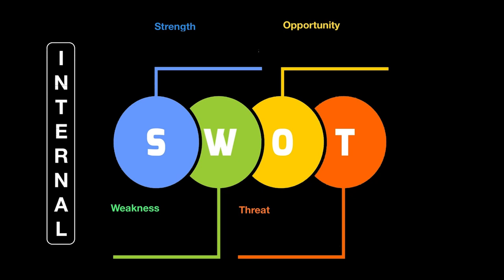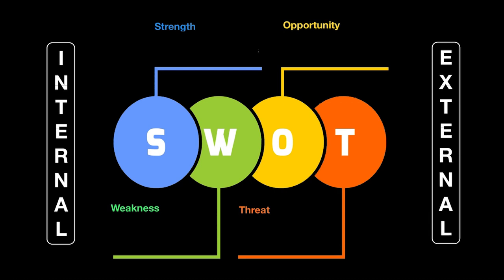Whereas when you look for opportunities and threats, they're obviously presenting themselves from the space around you, so they are external. When businesses want to see what they're doing well within themselves, they look at strengths and weaknesses — the internal side. And to see what's changing in the external environment, they'll look at opportunities and threats. The strengths, weaknesses, opportunities, and threats could be anything the business feels it can note down.